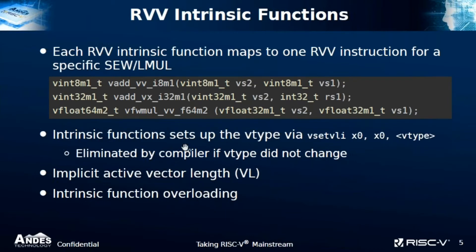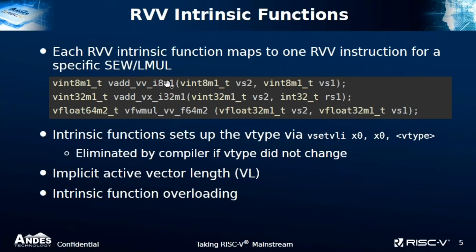Finally, there's function overloading. Since we specialize each instruction into different combinations of element width and LMUL — for example, there will be one version for 8-bit integer, another for 16-bit integer, another for 64-bit integer, and for different LMULs — as a programmer you probably don't want to write this suffix to tell the compiler which one you want, since it's possible to infer which one you want from the argument types alone. So in this case, from the argument types, it knows this is a vector add between two vectors with element width 8-bit and LMUL 1, so we don't have to write the i8m1 suffix and can overload this function along with the other specializations.